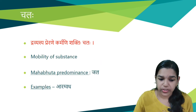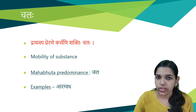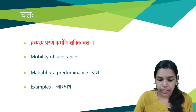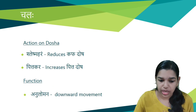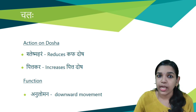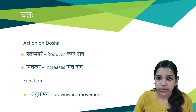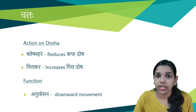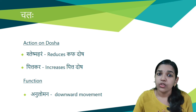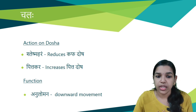Next is Chala guna, the opposite of Sthira. Dravyasya prerane karmani shakti hi chala ha. The mobility of a substance is called Chala guna. Jala is the predominant Mahabhuta. Example is aragvata. The actions carried out are Shleshma hara, that is reduces kapha dosha, and pitta kara, that is increases pitta dosha. It is anulomana, that is it helps in downward movement. Vata dosha has to move downwards, and if it moves upwards, such dravyas bring it back to its correct downward direction.